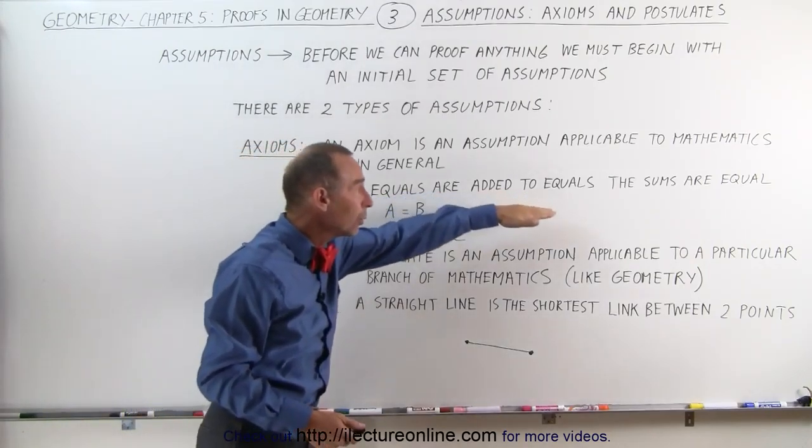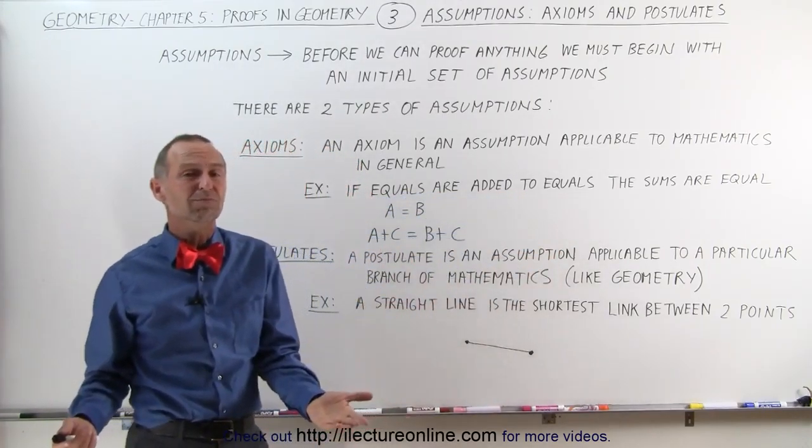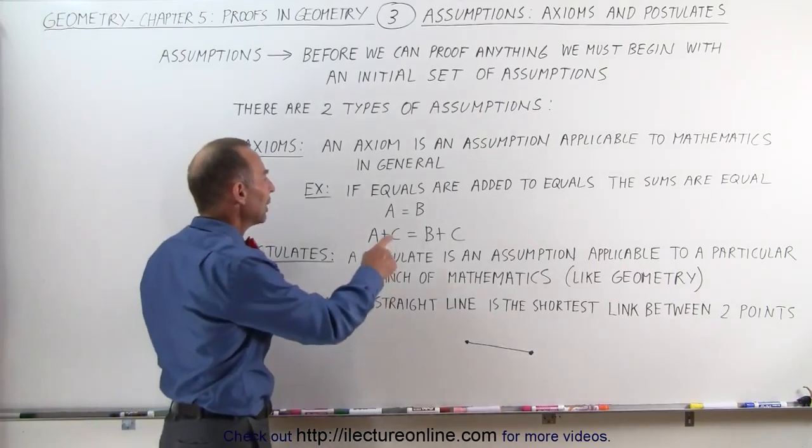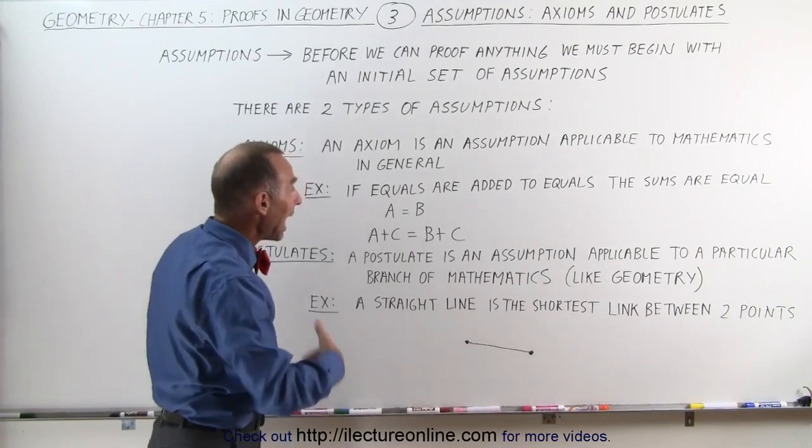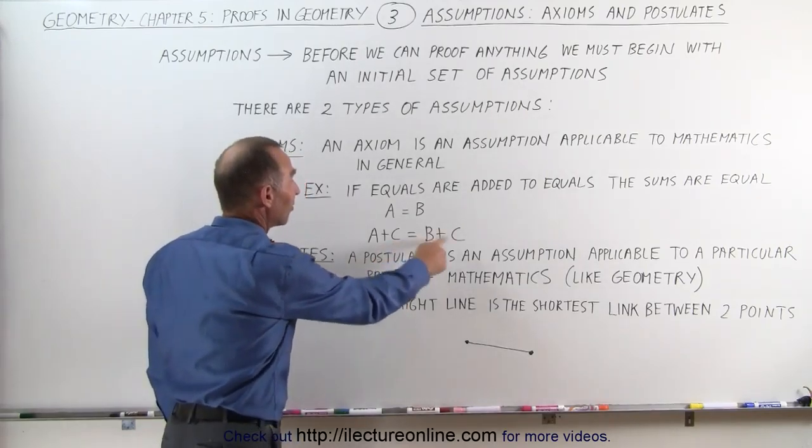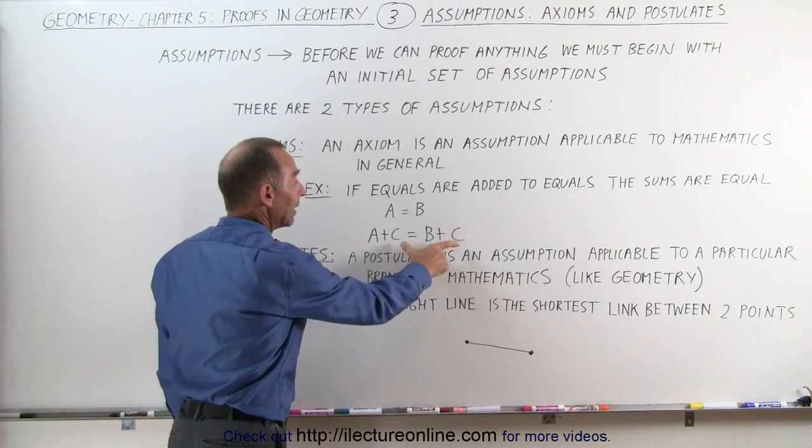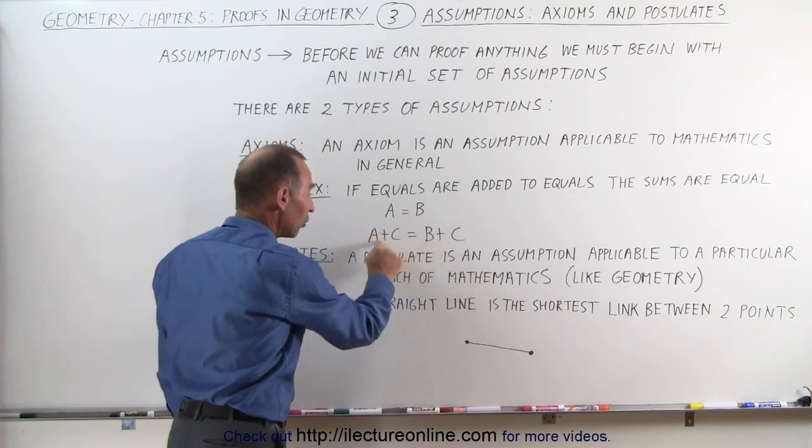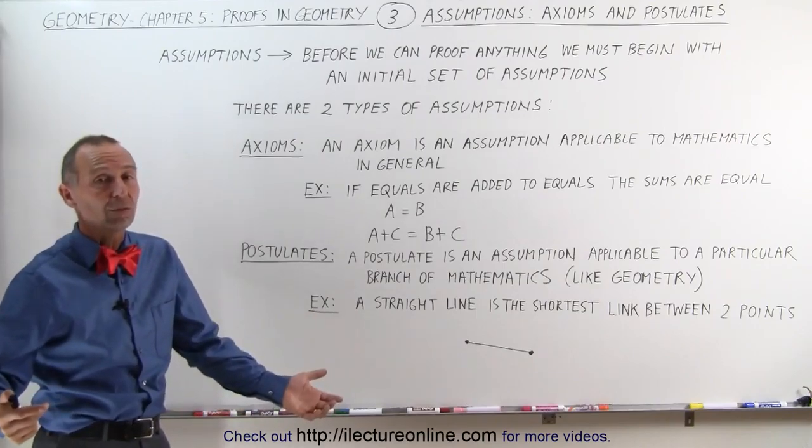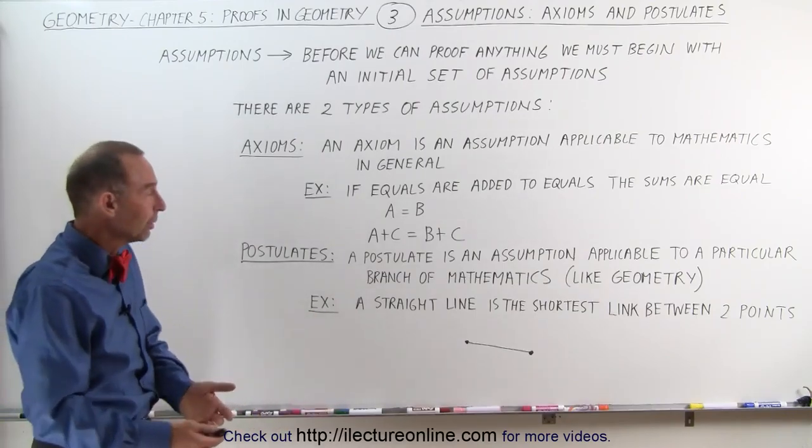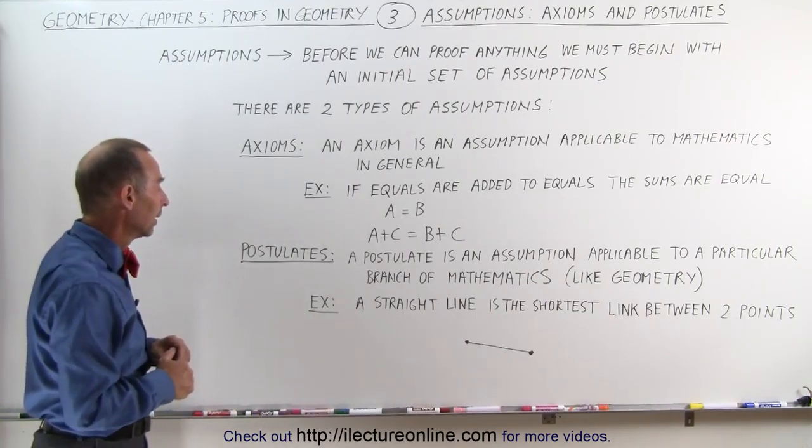For example, if equals are added to equals, the sums are equal. In other words, if we know that A = B, and then we add equals, we add C (and of course C = C), so when we add equals to equals, A + C = B + C. The sums must be equal to one another. That is an assumption. We accept it. We don't need to prove it.